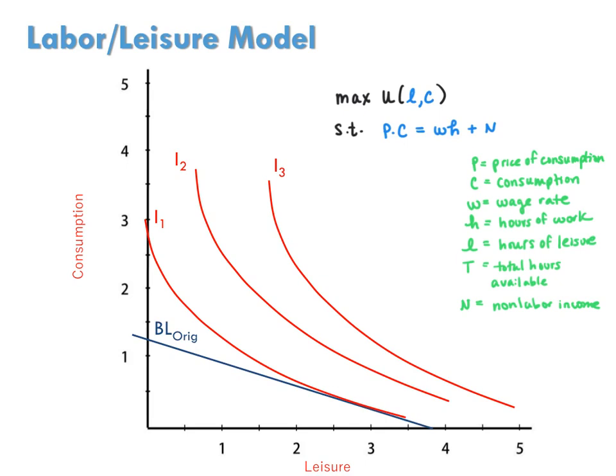The consumer also faces a time constraint which says the total amount of hours available must equal or sum up to hours spent working and hours spent in leisure. Since hours of labor and hours of leisure are inversely related, the more time you spend in leisure, the less time you have to work, we can derive a household's labor supply by looking at its leisure demand.